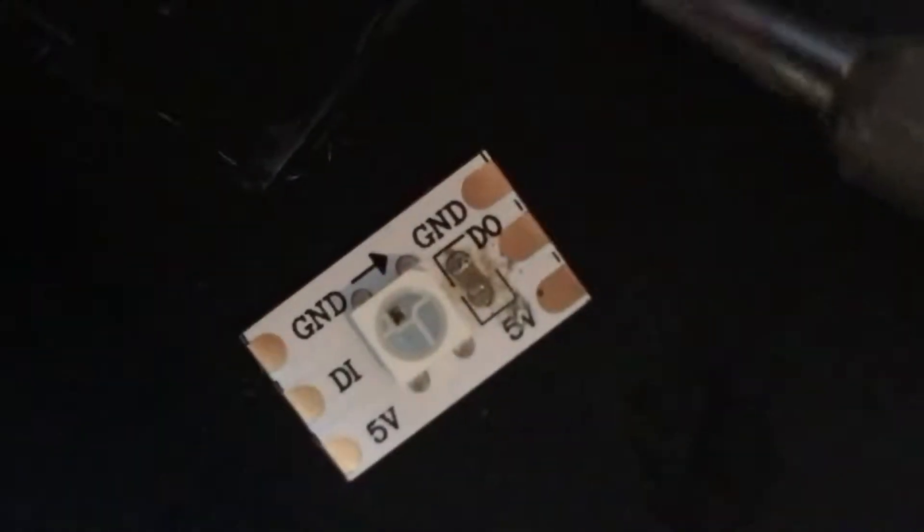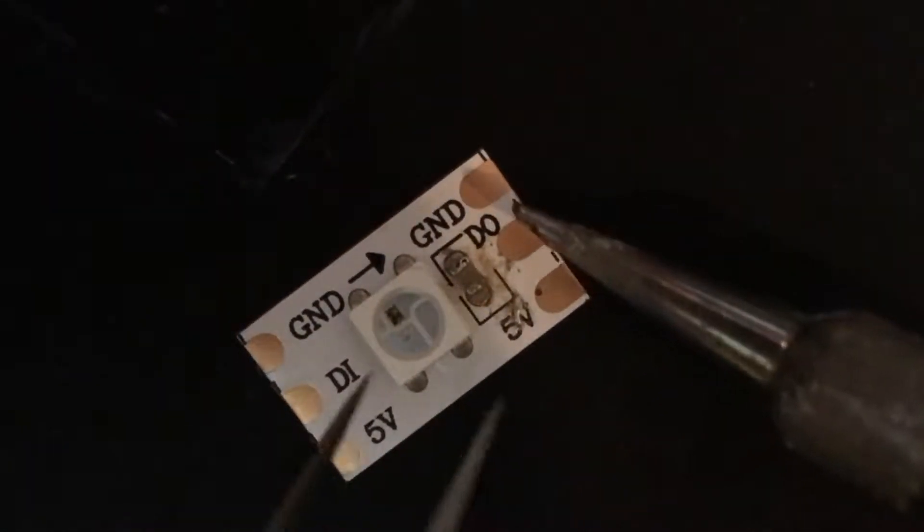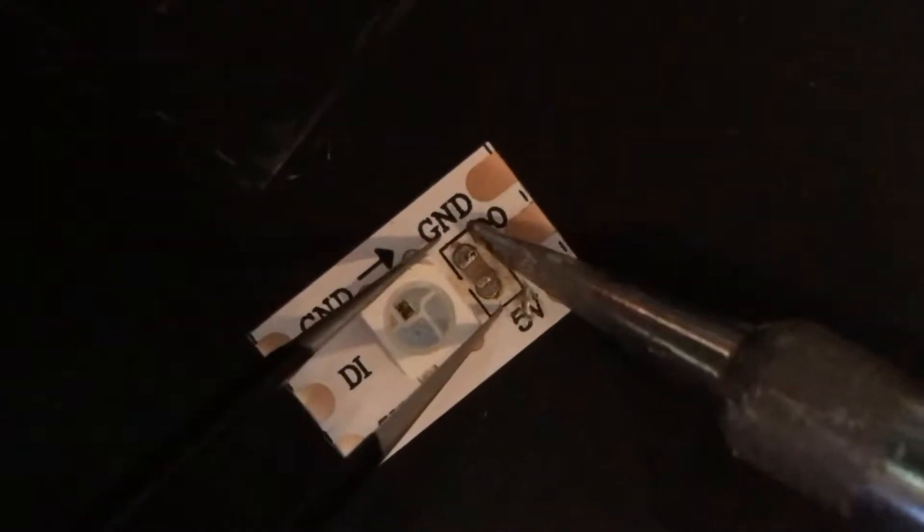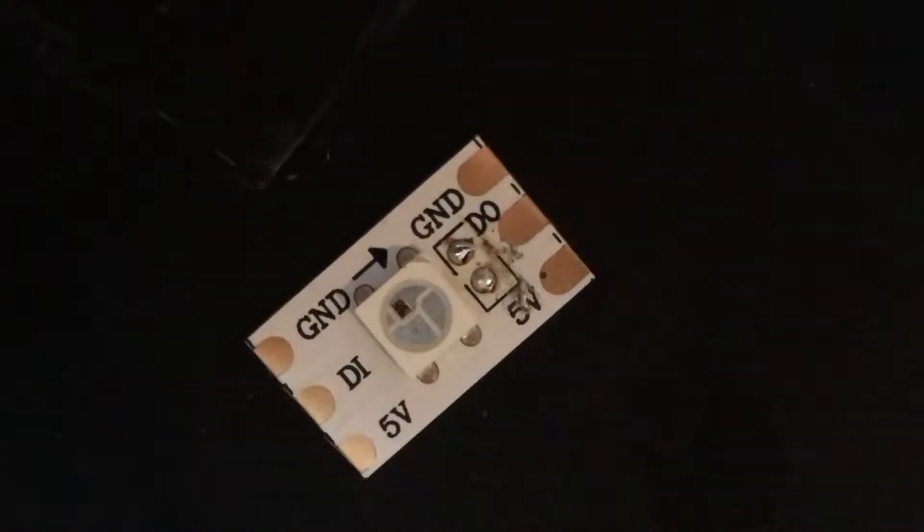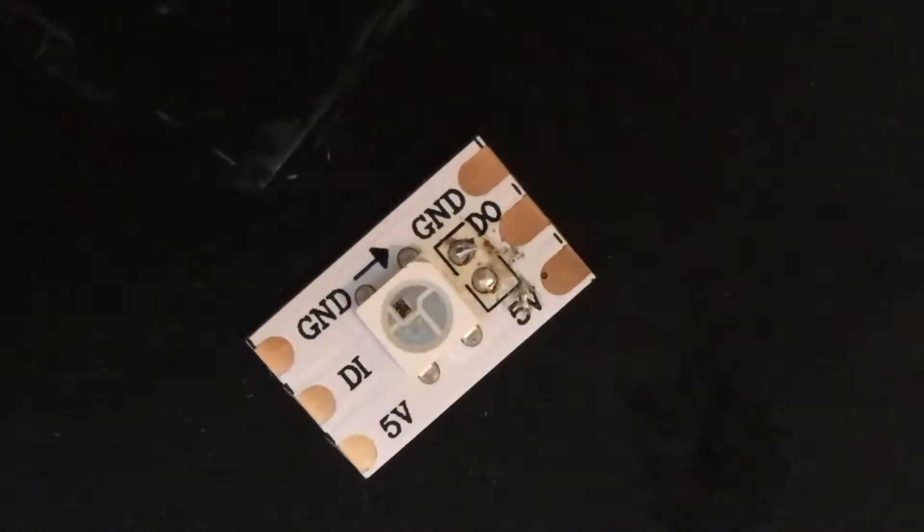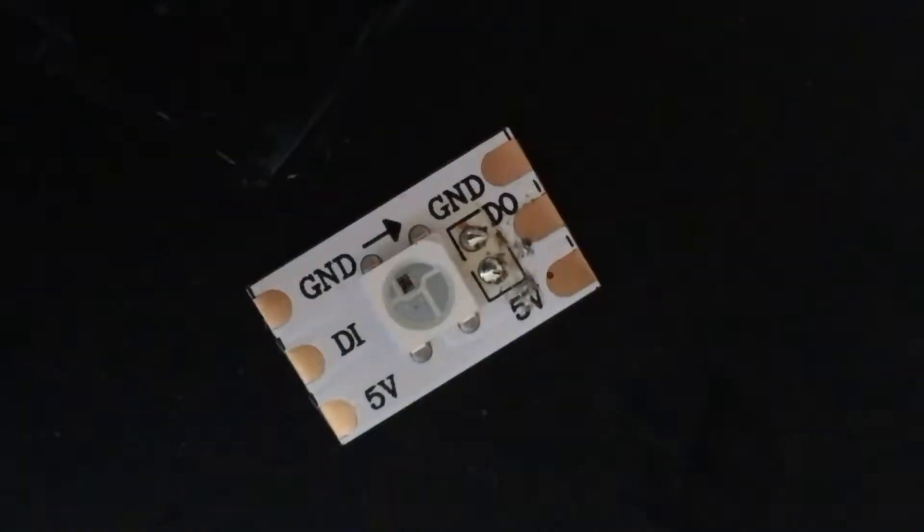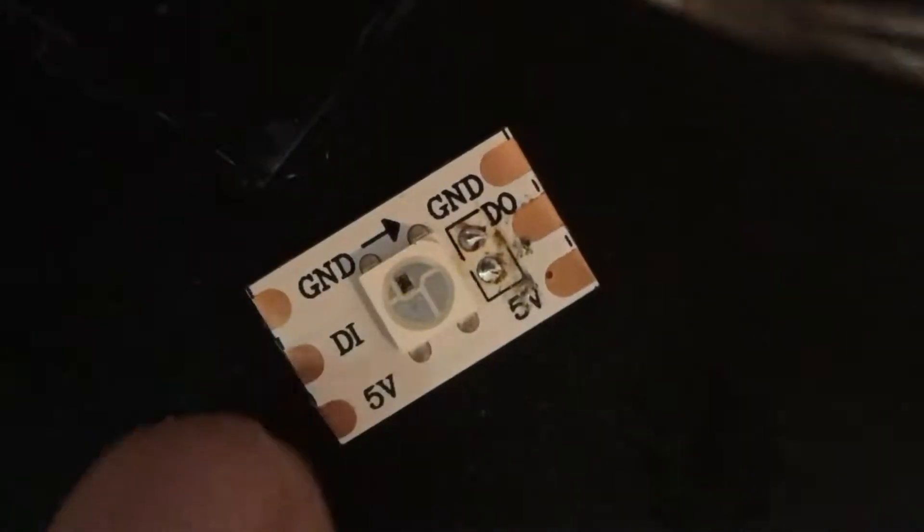I think I said in the last video that they don't work too well with the addressable LEDs because of the decoupling capacitors. So what I did in this video was take a single WS2812 RGB LED on a strip and just took the decoupling capacitor off so that the lens would fit on properly.